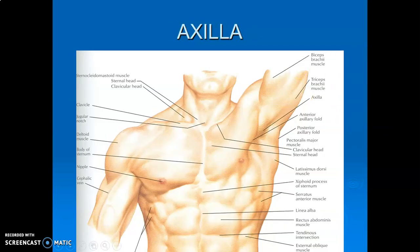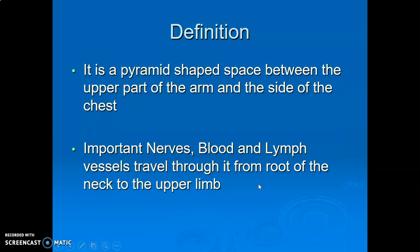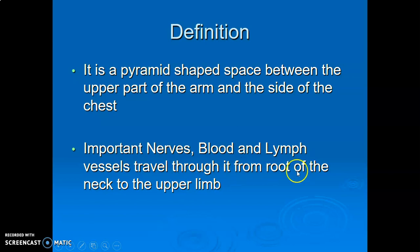The axilla is a pyramidal-shaped space between the lateral board of the upper thoracic cavity and the medial aspects of the arm. This is the axilla, with your anterior axillary fold, posterior axillary fold, and your mid-axillary line at the midline. It contains nerves, blood vessels, and lymphatic vessels which travel from the root of the neck to get to the upper limb.